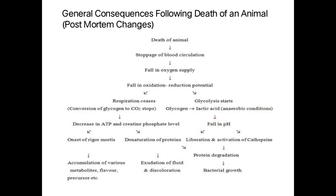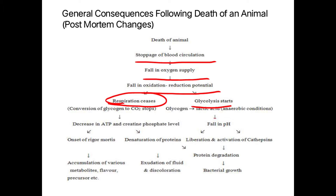Post-mortem changes are the general consequences following the death of an animal. Soon after death, there is stoppage of blood circulation. Since the nerves are broken during slaughtering, blood circulation stops. As a result, the oxygen rate falls, leading to a fall in oxidation-reduction potential, causing two conditions: respiration ceases, and glycolysis starts.